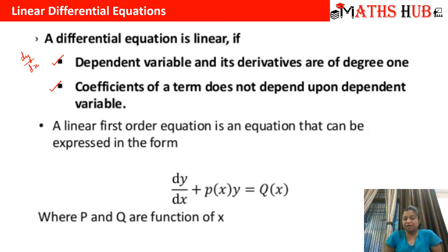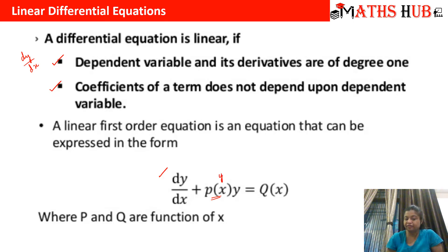Any first order linear differential equation can be expressed in the form dy/dx + P(x)·y = Q(x). Here you can see that y is the dependent variable and P(x) is the independent variable coming in product with y, which is allowed. But it cannot be P(y)·y — the coefficient function cannot depend upon the variable y.